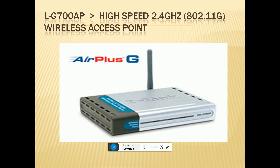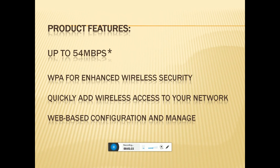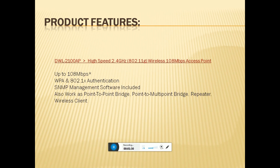This is the D-Link 2.4 GHz 802.11g wireless access point. The product features include up to 54 Mbps wireless access, enhanced wireless security, the ability to quickly add wireless access to your network, and web-based configuration and management.